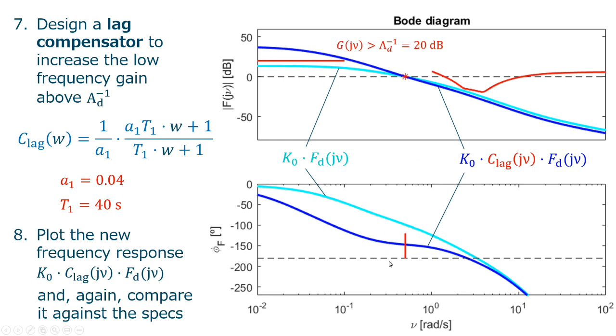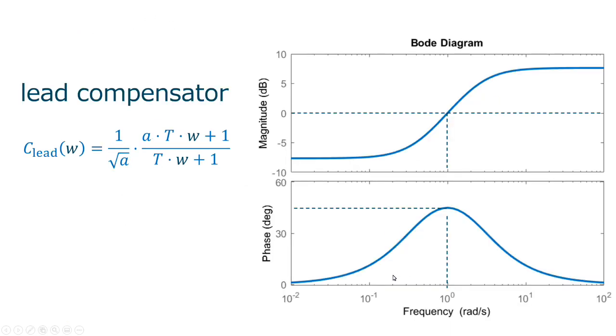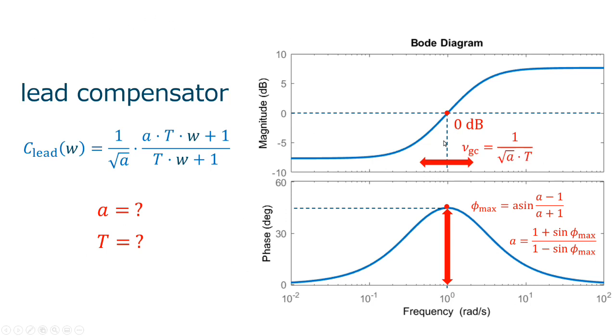So the next step is to solve the phase margin by using the lead compensator. The lead compensator has a similar structure with the lag compensator. The main difference being that, in this case, A is larger than 1. And instead of 1 over A, when we have 1 divided by the square root of A, the impact of this is that we have 0 dB at this middle point. So now we have to find the values of A and T. And for that, the selection of A depends on the maximum phase that we want to add in this central point. And the parameter T depends on the frequency where we want to put the controller, the compensator.